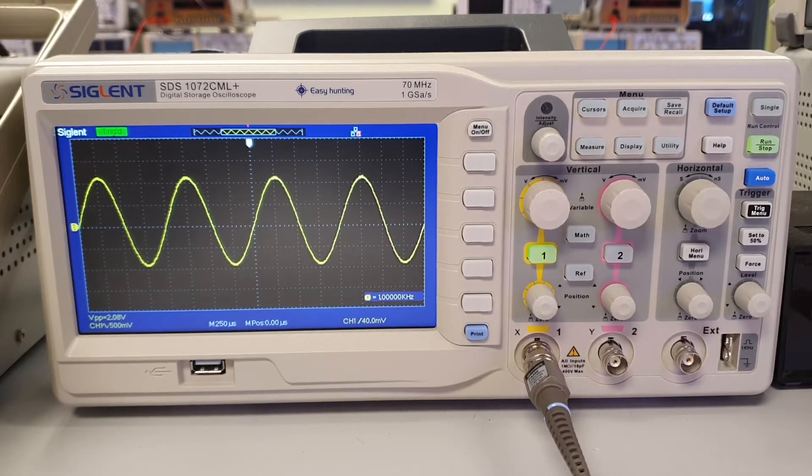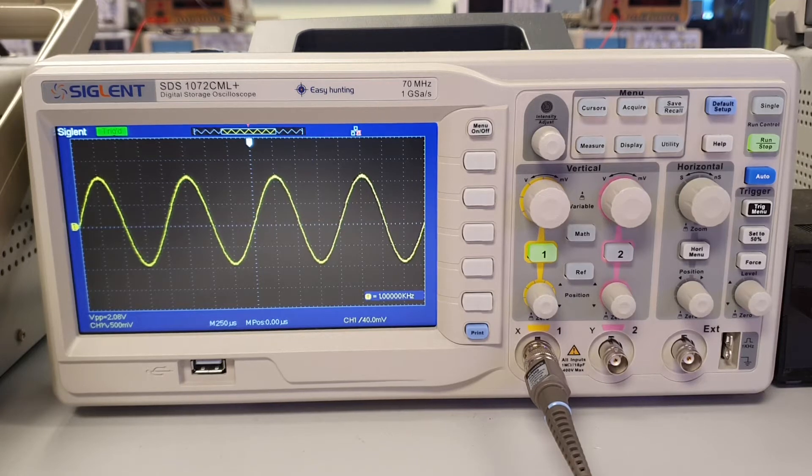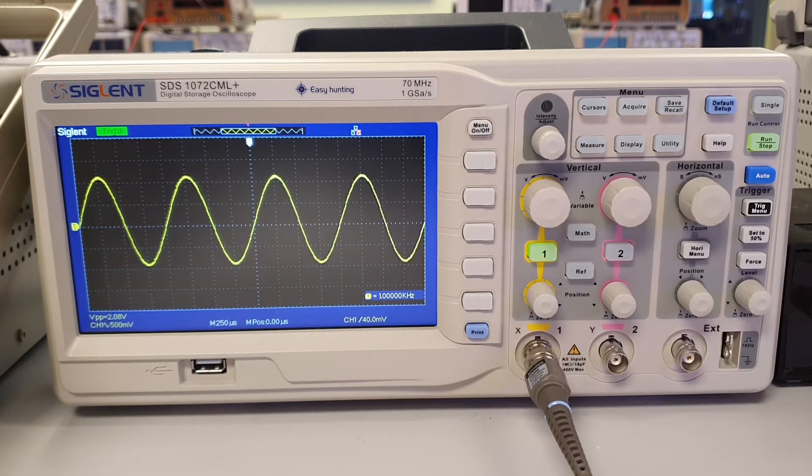This video is to show you how to display some AC voltage measurement parameters using the digital oscilloscope. Let's say we have a sine waveform on the oscilloscope display now and we want to know the AC voltage information of the waveform.